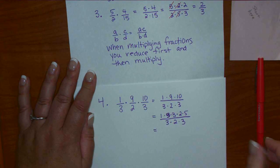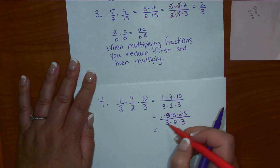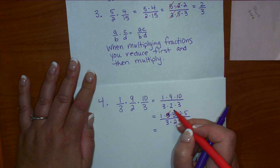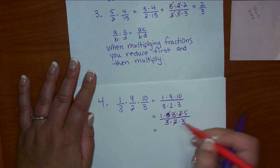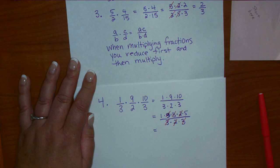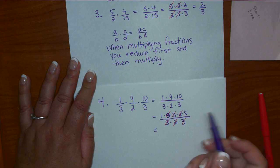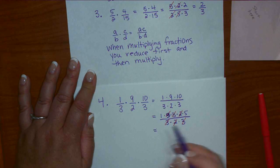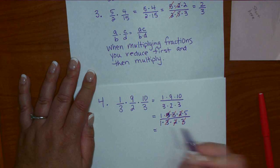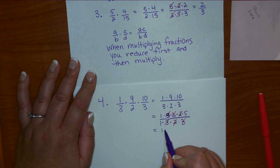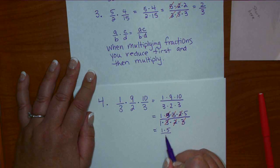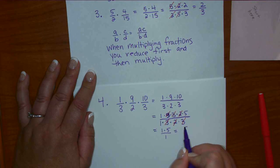So what cancels? Another 3 and a 2. What do we have left? We've got 1 times 5 on the top. Remember, there's always a times 1 — so if the whole top is gone, there's still a 1 there. What's left is 1 times 5 over 1, which is just 5.